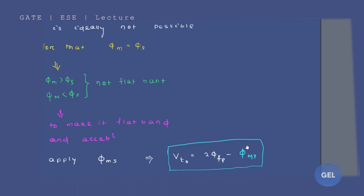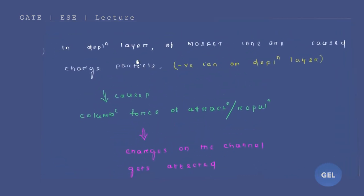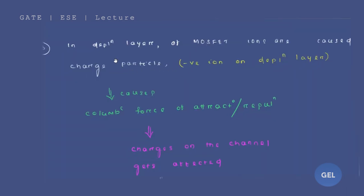Now moving on, we will add more terms. Why will we add? Look here carefully. In depletion layer of MOSFET, my dear friend look here carefully. So in the depletion layer of MOSFET, ions are charged particles.